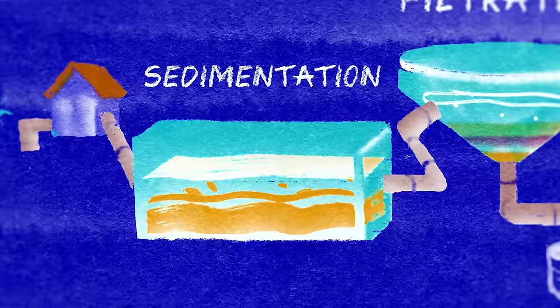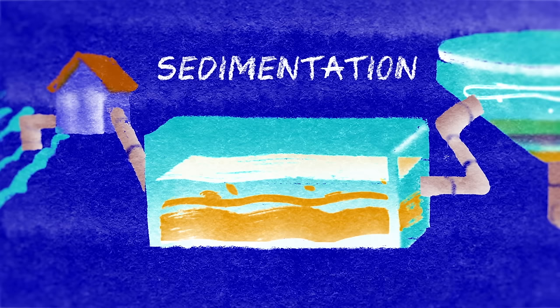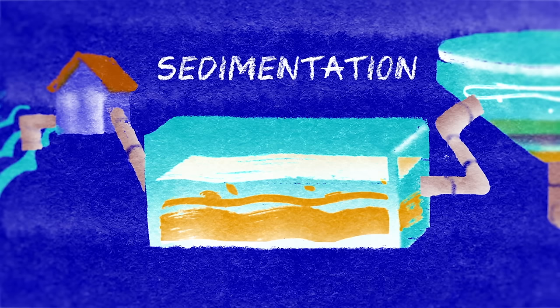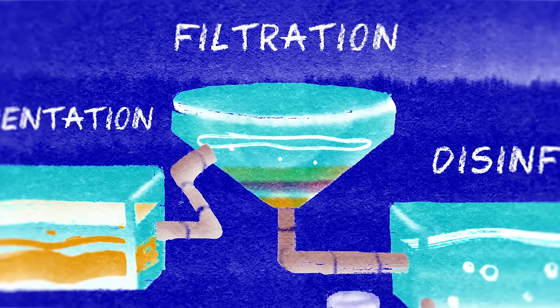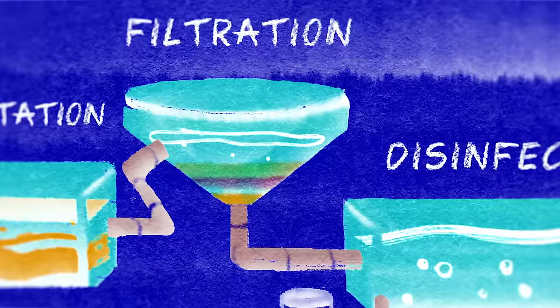Once water has been collected in a treatment facility, it's ready for cleaning. The first step, sedimentation, just takes time. The water sits undisturbed, allowing heavier particles to sink to the bottom. Often, though, particles are just too small to be removed by sedimentation alone and need to be filtered. Gravity pulls the water downward through layers of sand that catch leftover particles in their pores, prepping the water for its final treatment—a dose of disinfectant.